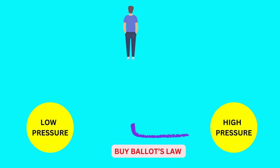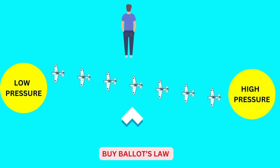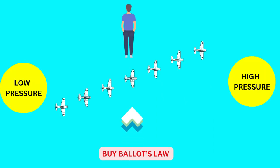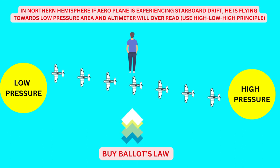Wind direction can be found using Buys-Ballot's law, which states that if an observer is standing in the northern hemisphere with his back towards the wind, the low pressure area will be on his left, and the reciprocal will be the result in the southern hemisphere. Questions invariably come during examination on interpretation of Buys-Ballot's law, and sometimes the question is twisted in terms of port or starboard drift of the aeroplane, which can be worked out using wind direction. So in the northern hemisphere, if the aeroplane is experiencing a starboard drift, he is flying towards the low pressure area. And if he experiences a port drift, then he is flying from low to high pressure area. We can add one more twist: in the northern hemisphere, if the aeroplane is experiencing starboard drift, he is flying towards low pressure area and the altimeter will over-read — you can work this out using the high-low-high principle. So a lot of variables can be injected for questions on Buys-Ballot's law.